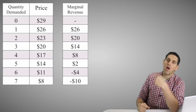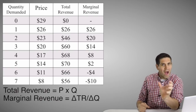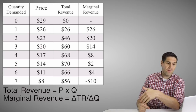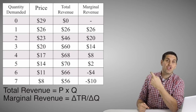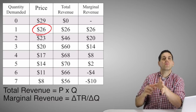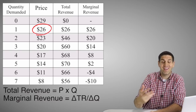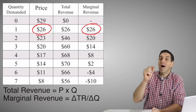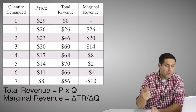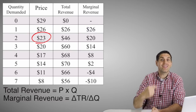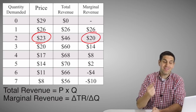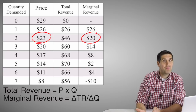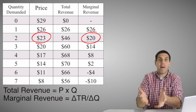Let me put in a total revenue column — that's price times quantity. The marginal revenue is just the change in total revenue. When I sell the first unit for $26, the additional revenue is $26. But when I sell another unit for $23, the additional revenue is not $23 — it's only $20 because I lose $3 on the other unit. The first unit I could have sold for $26, but now I'm only selling it for $23 because I'm not price discriminating.